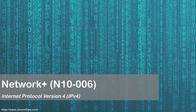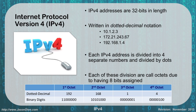IPv4, Internet Protocol Version 4. With IPv4, our addresses are 32 bits in length — that's 32 ones or zeros. When we convert that to decimal, we get what's called dotted decimal notation, where we have four numbers separated by dots. Those numbers might be something like 10.1.2.3, or 172.21.243.67, or 192.168.1.4. Those are all examples of a valid IPv4 address.